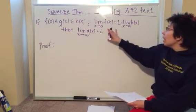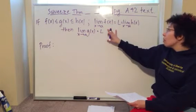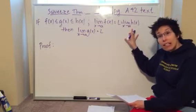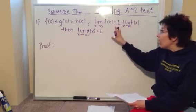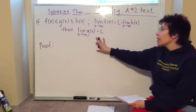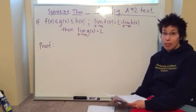And we have that the limit of f(x) as x approaches A is equal to the limit of h(x) as x approaches A. So we can call that L. Then the limit of g(x) is the same as x approaches A. So we want to prove this theorem.